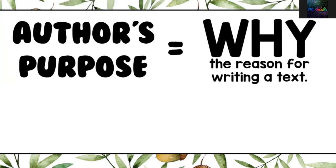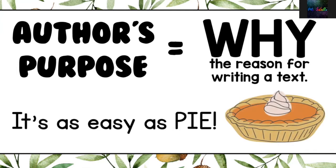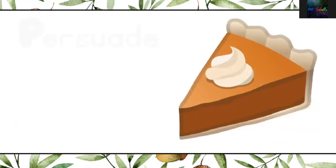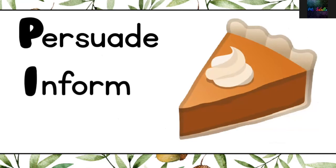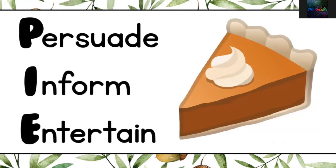We are going to use a helpful acronym so that identifying the author's purpose is as easy as PIE. PIE is spelled P-I-E. P is for persuade, I is for inform, and E is for entertain.